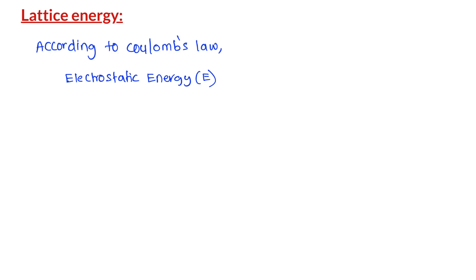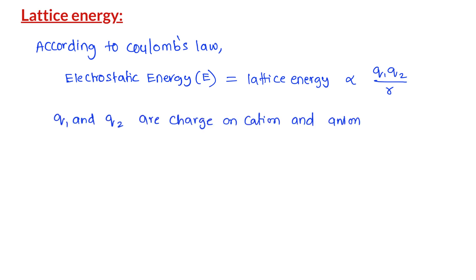That is, electrostatic energy E — in our case, this is equal to lattice energy — is directly proportional to Q1 times Q2 divided by R, where Q1 and Q2 are the charges of the cation and anion, and R is the distance between them.